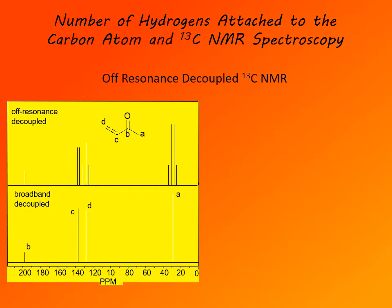We print the off-resonance decoupled spectrum above the broadband decoupled spectrum so that above each signal we can see the splitting pattern. Signal A is split into a quartet, meaning that is a CH3 group. Signal B at the far end is the carbonyl carbon — it is not split, meaning it has no protons attached to it, and note its low intensity. Signal C is a CH carbon, split into a doublet — only one proton is splitting it. Finally, signal D is a CH2 group, split into a triplet.